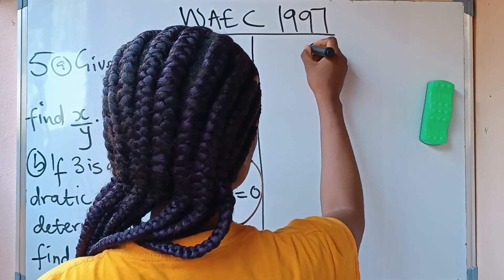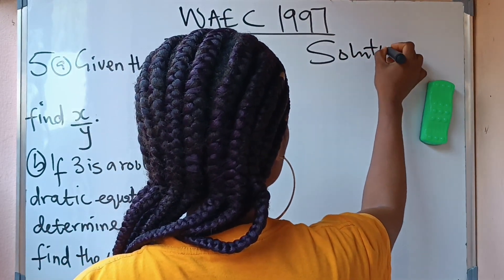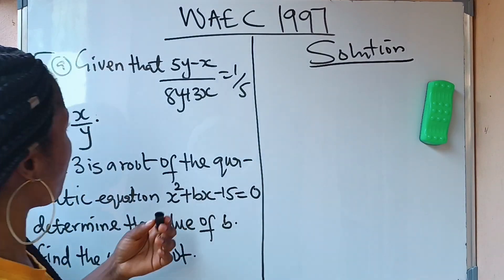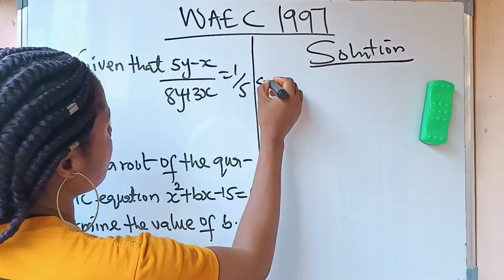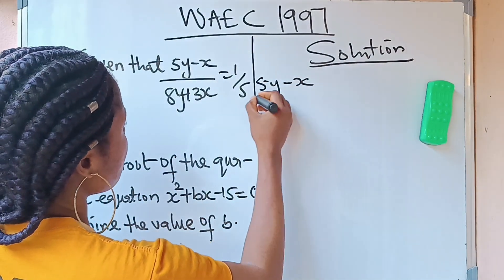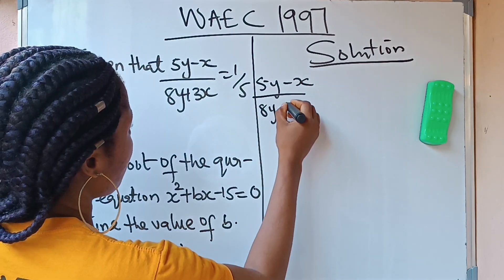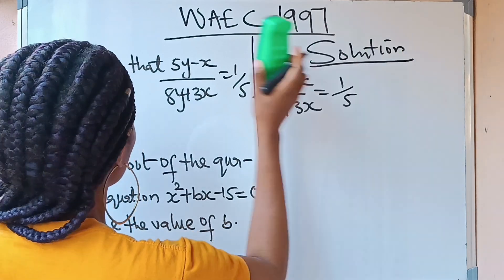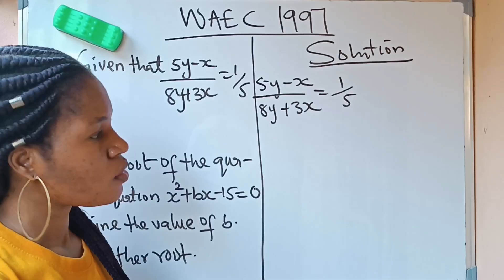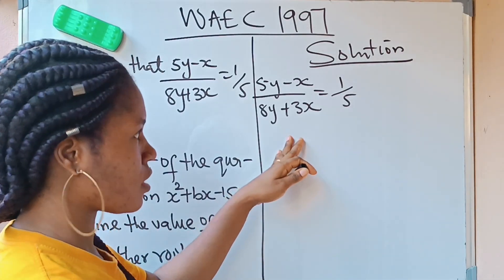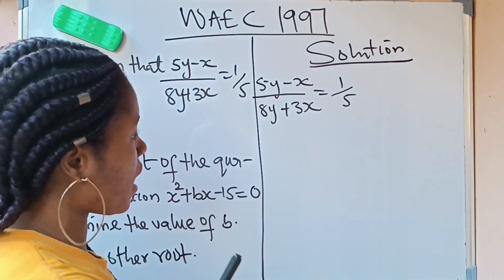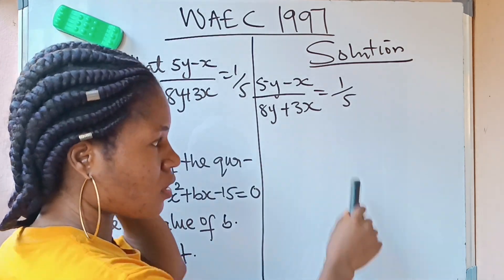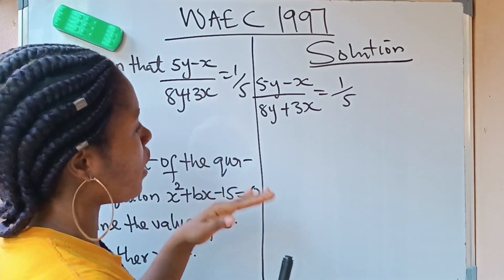Solution. We are told that (5y - x) / (8y + 3x) = 1/5. So what do we do now? When you have this type of question, the first thing you should do is to try to clear this root fraction. And how do you clear this fraction? You can do that if you just do cross multiplication.